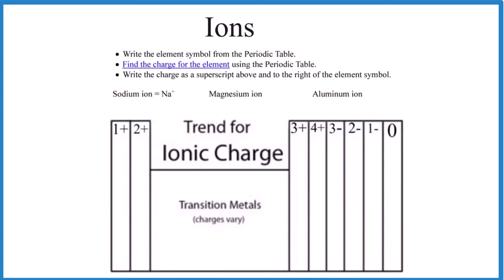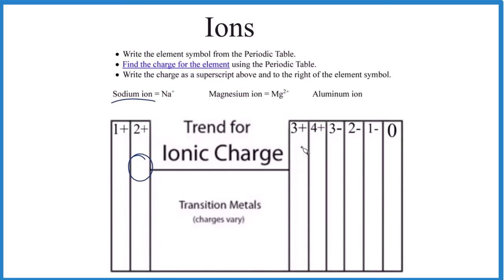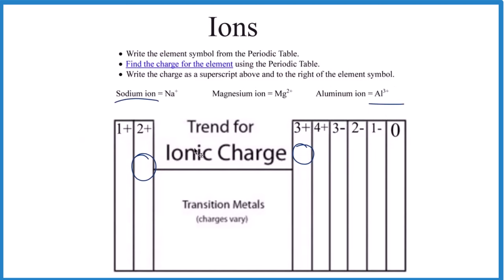For positive ions, we go to the periodic table, find the name, and that gives us the ion. Sodium is just the sodium ion with a plus. Magnesium is Mg²⁺. Give this one a try — aluminum is right about here. The aluminum ion is three plus, so we call it Al³⁺. That's pretty easy.